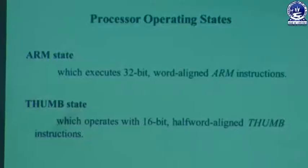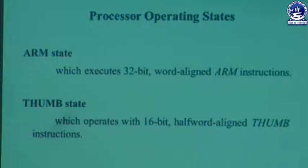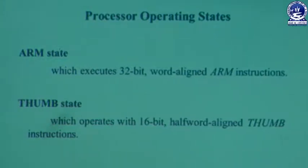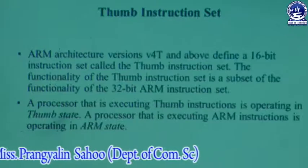The ARM state compulsorily contains every instruction in 32-bit word-aligned format when entering the computer system. However, when the processor needs to execute data in 16-bit format — that is, when all instructions enter in 16-bit or half-word aligned format during program execution — the processor operating state used is called the thumb state.